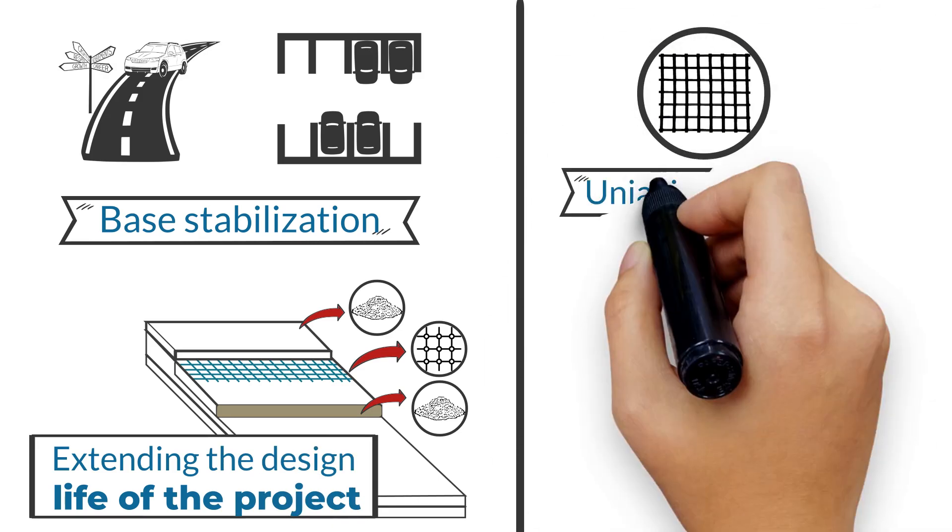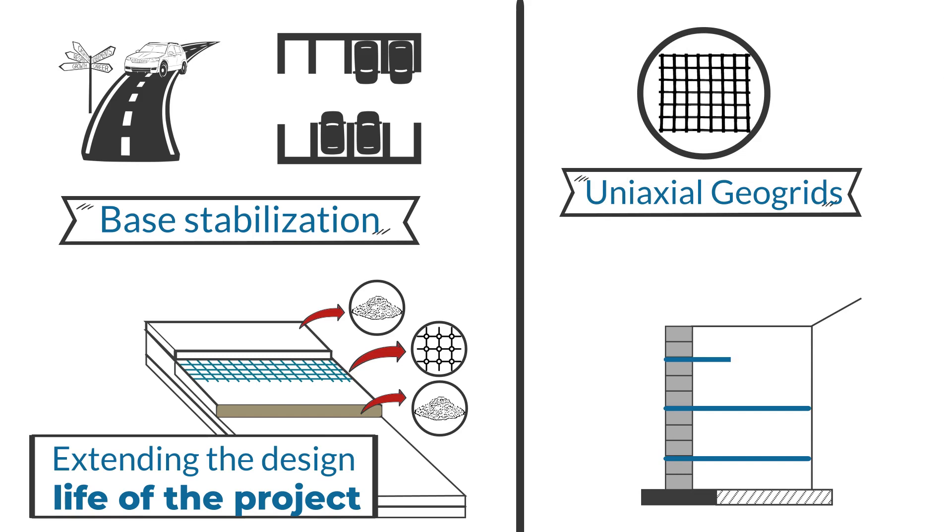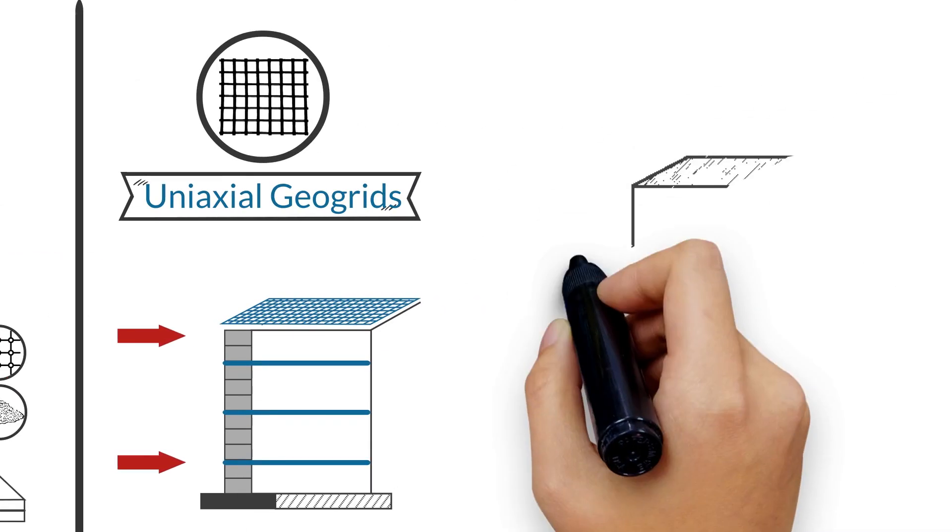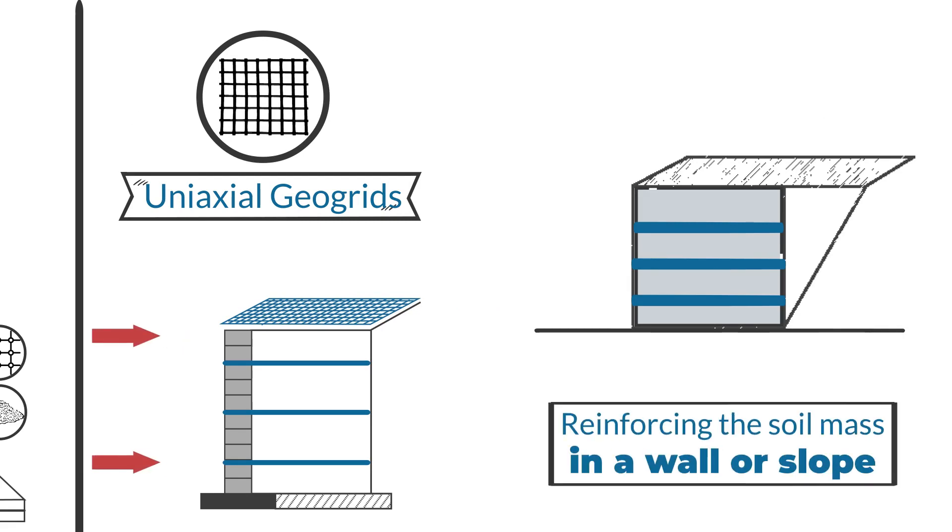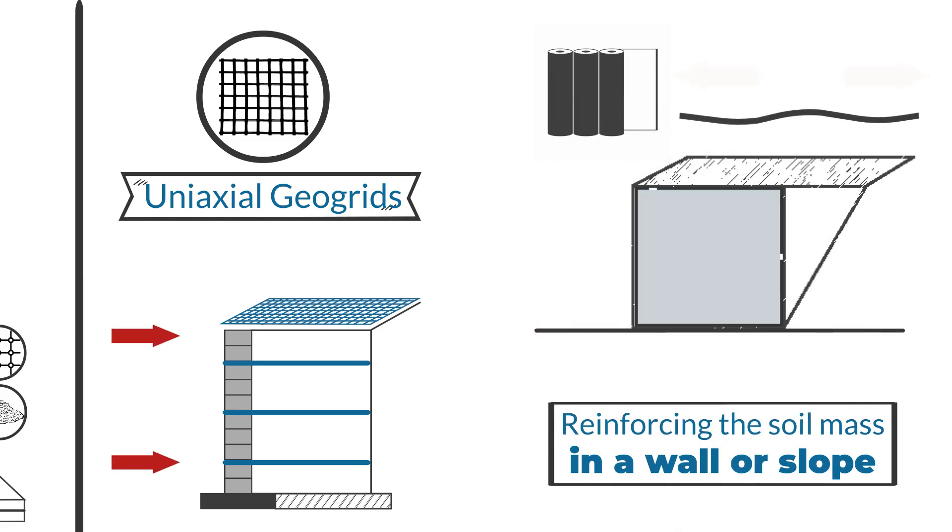The other kind, uniaxial geogrid, is stronger in the machine direction. Uniaxial geogrid performs its job by interlocking with the fill material and reinforcing the soil mass in a wall or slope. Most uniaxial geogrids are made with polyester, which will give slightly while under strain, allowing it to stretch as the reinforced slope or retaining wall settles while maintaining the strength needed to reinforce the slope or wall.